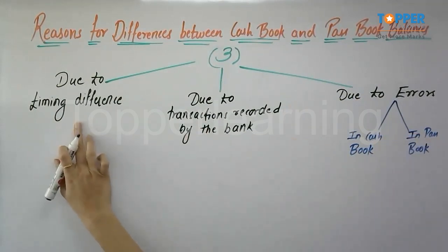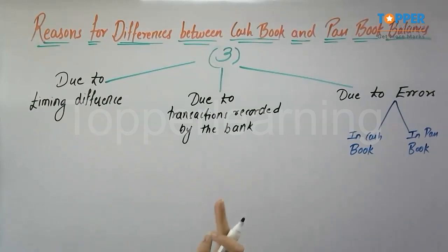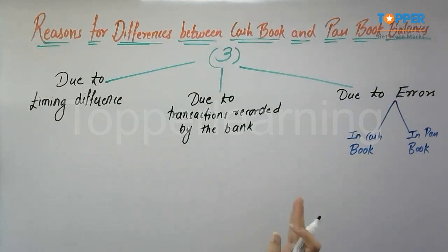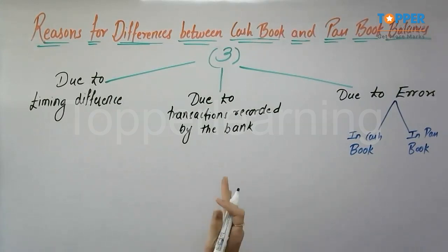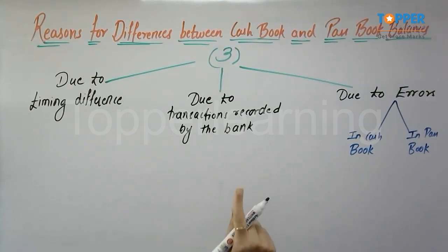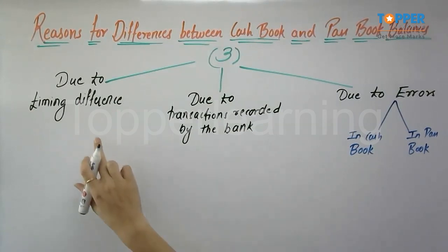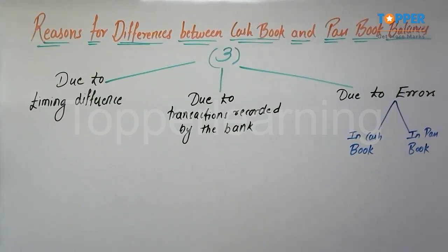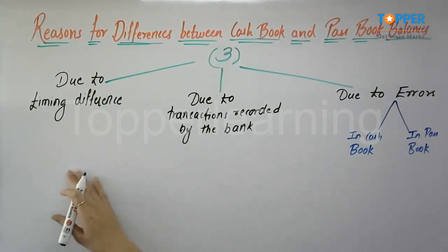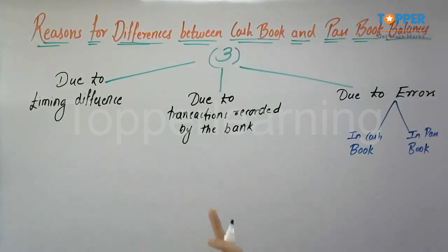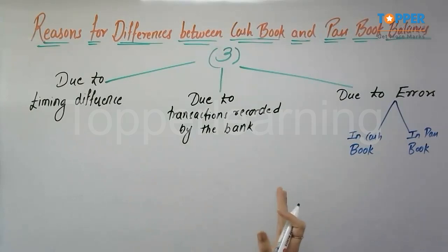Moving ahead, we have the differences due to the timing difference. It is possible that on a particular date a transaction is recorded in the cash book but the same is not recorded in the passbook, so the balances will not tally. Similarly, it is also possible that one transaction is recorded by the bank but the same is not recorded in the cash book. All such differences where a transaction is not recorded in both books at the same time are classified under the reasons due to timing difference.